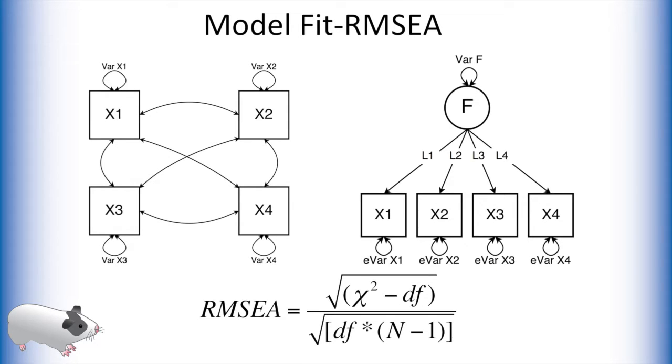Finally, we have the RMSEA value. The RMSEA value is calculated using the chi-square difference between our factor model and the saturated model, where n is the number of observations in our dataset. The lower the chi-square value is relative to the degrees of freedom multiplied by n, the lower the value of the RMSEA.